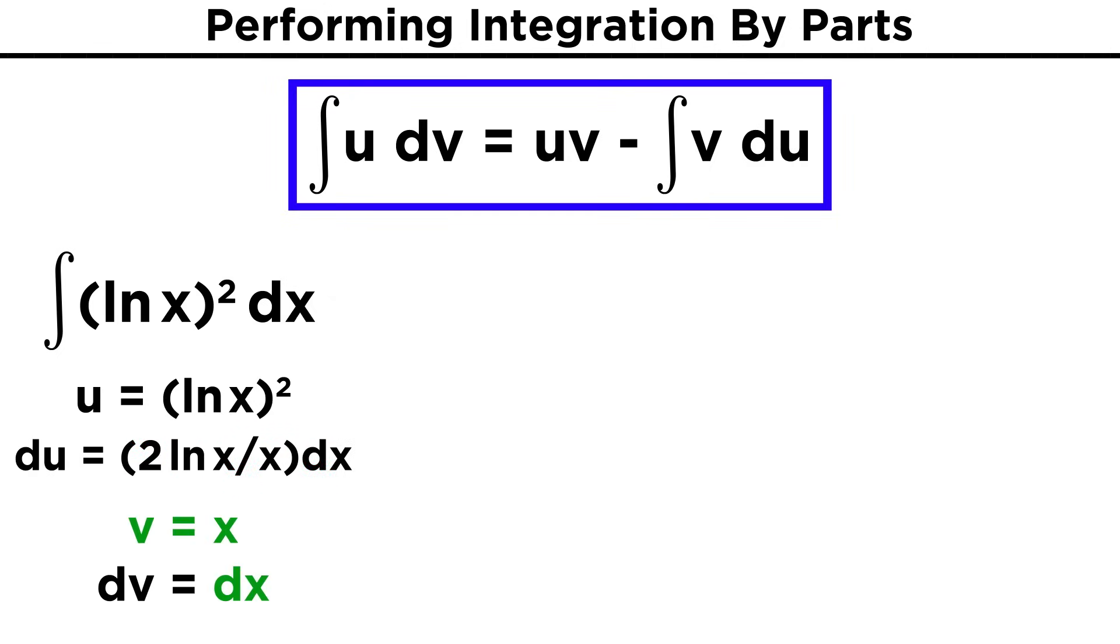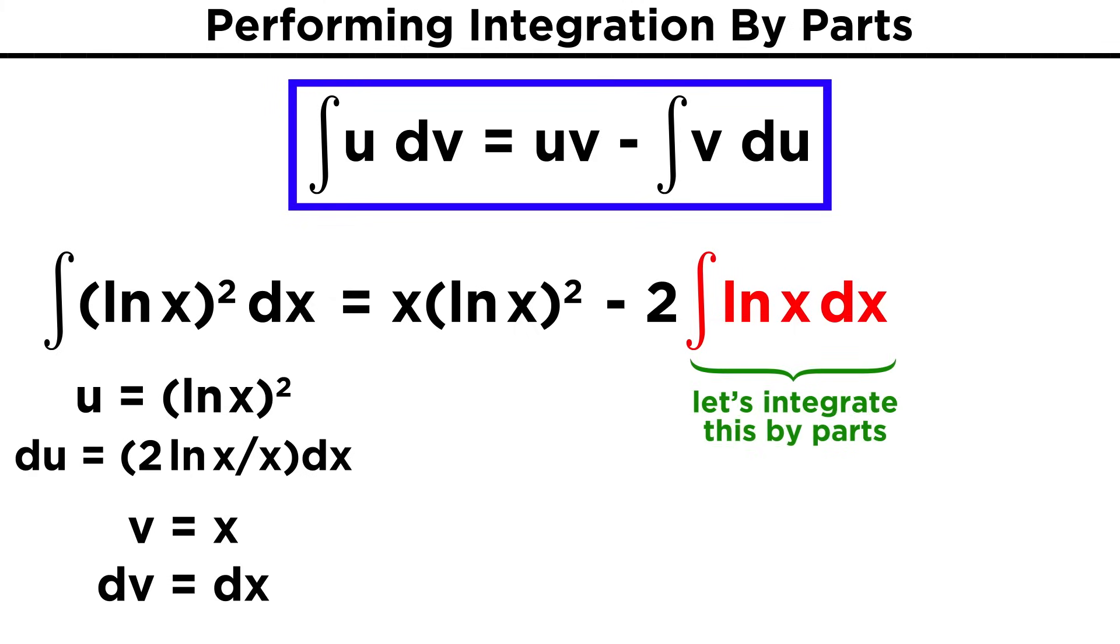So that gives us two ln(x) over x dx. Getting v is no problem, from dx we just get x. So plugging things in, uv will be x times ln(x) quantity squared. Then we subtract from that the integral of x times two ln(x) over x. The x's cancel, leaving us with two ln(x). Let's take out the two to get simply ln(x). Well we can't integrate this normally, but as we saw in an earlier example, we can integrate this by parts, so we just repeat this process.